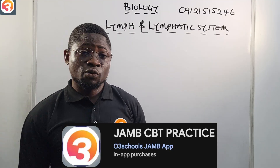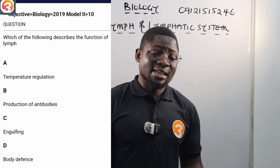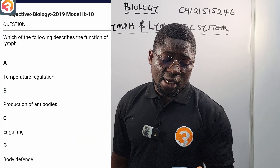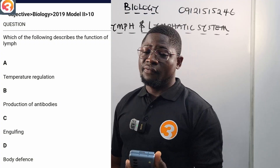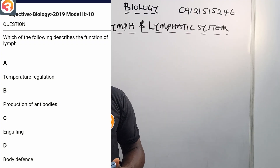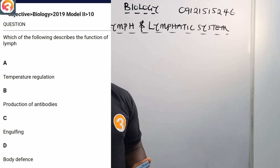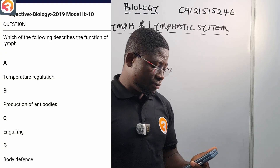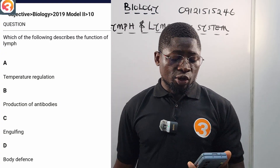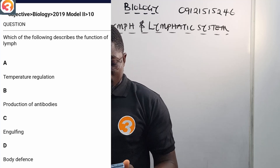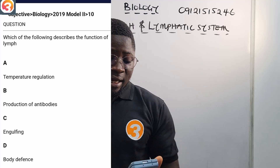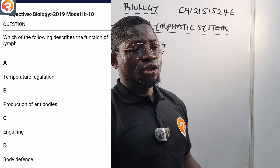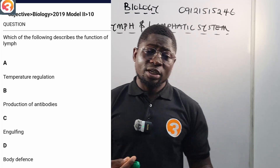This is a 2019 question, number 10, on the lymph and lymphatic system. It says: which of the following describes the function of the lymph? A says temperature regulation, B says production of antibodies, C says engulfing, D says body defense. We'll come back to this question at the end of class.